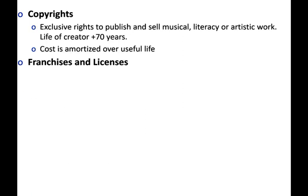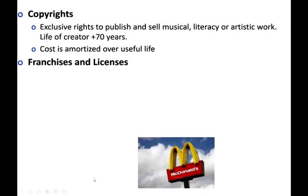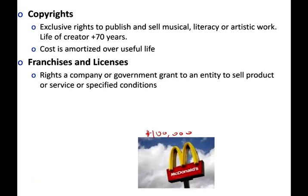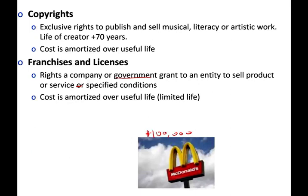Franchises and licenses are also intangibles. For example, if you want to operate a McDonald's, you have to pay the parent company a fee — say $100,000 or $200,000. That fee is an intangible: it's the right granted to an entity to sell a product or service. The cost is amortized over the useful life of the franchise. So if McDonald's gave you the right to operate for seven years and you paid $100,000, you split that $100,000 over seven years.